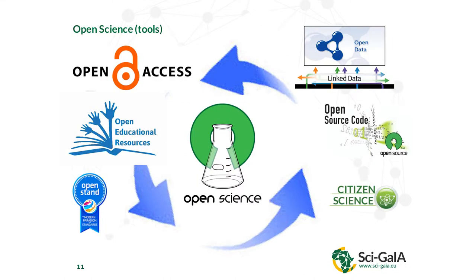To do open science, you need to be open everywhere: open access, open data — not only open data but linked data — open source code, open standards, and open educational resources. You should be so open that citizen science becomes possible with your research products, with the outputs of scientific research. Especially if those outputs have been funded with public funds, with taxpayers' funds.